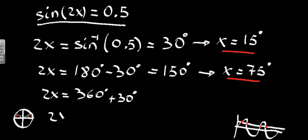And the next one is going to be 2x is also equal to 360, the first turn around the circle, plus 180 minus 30. And these are our four values, so we have here 390 degrees, and we also have here 510 degrees.